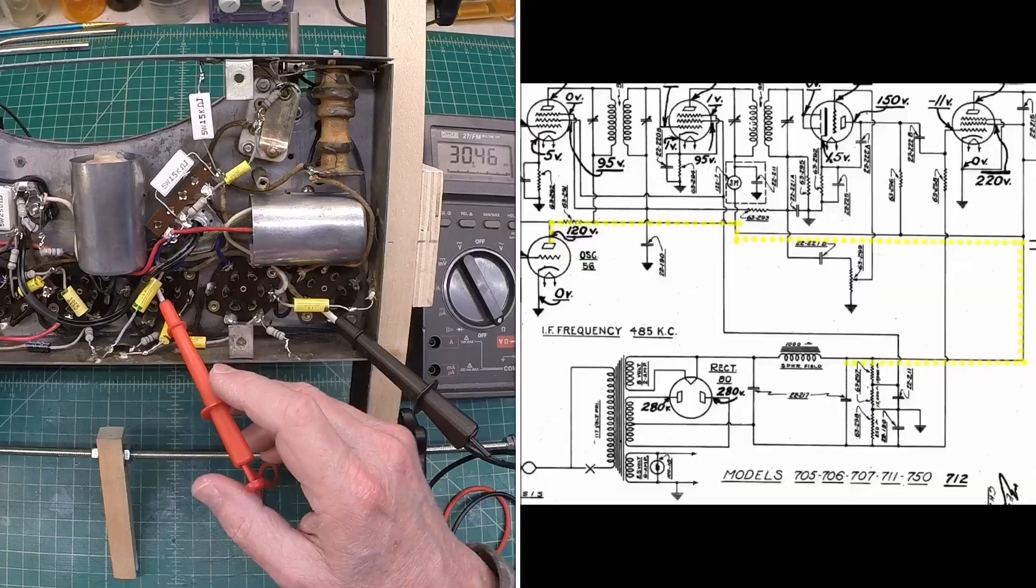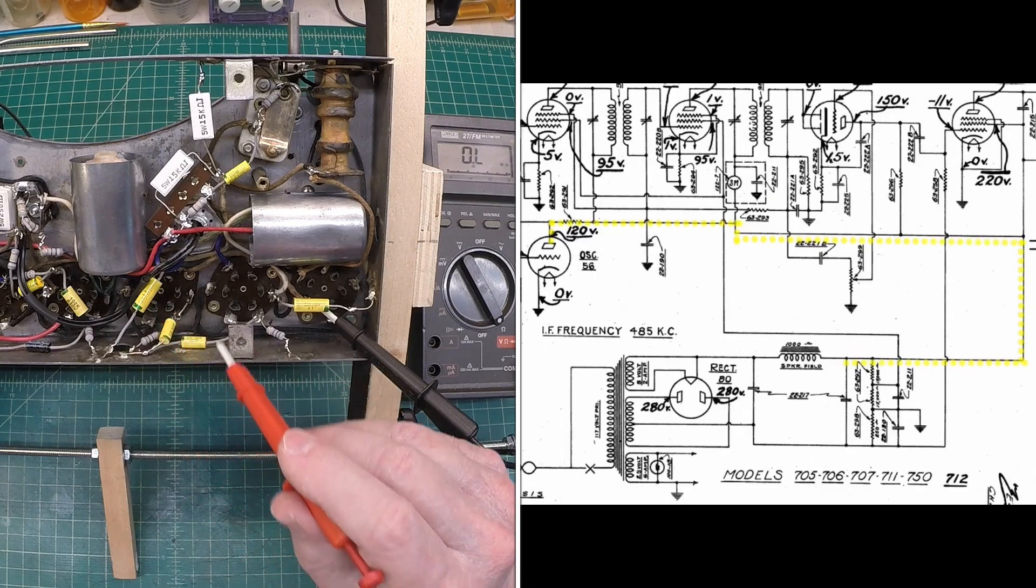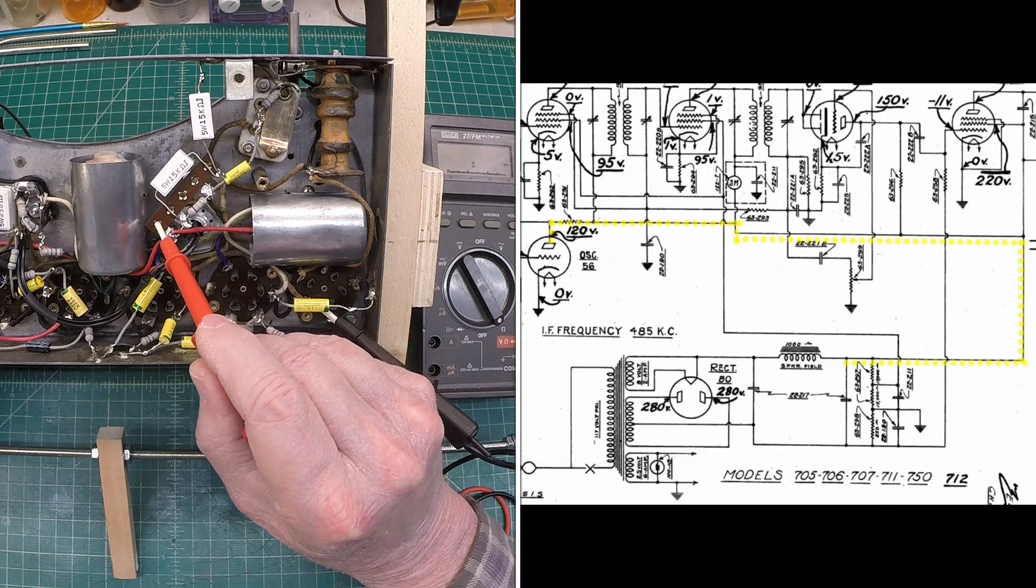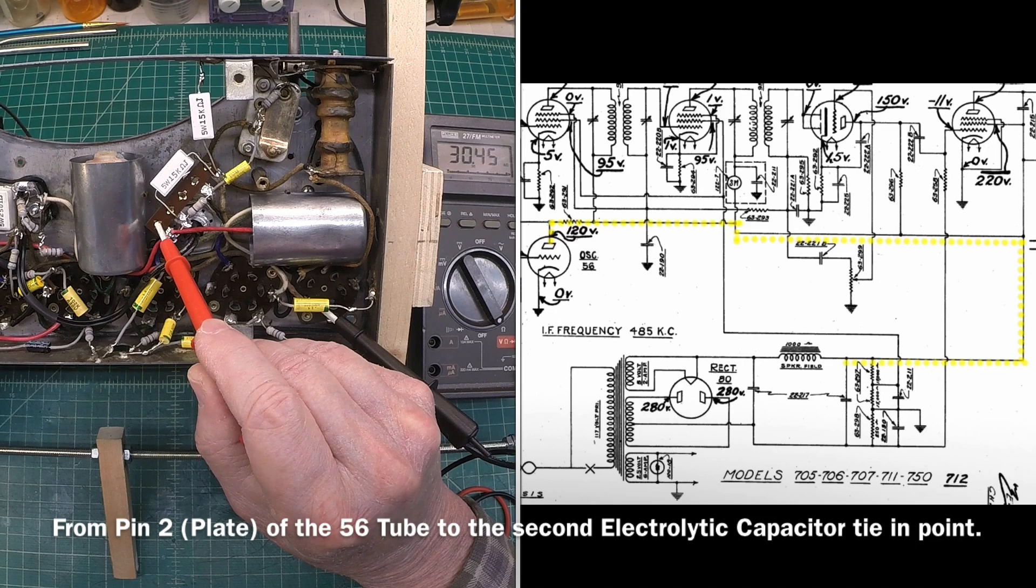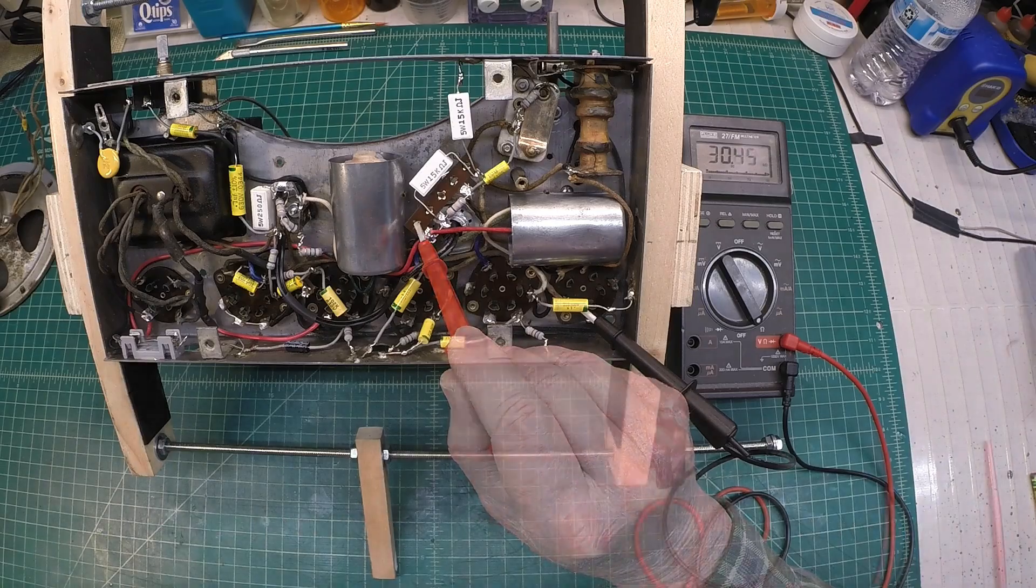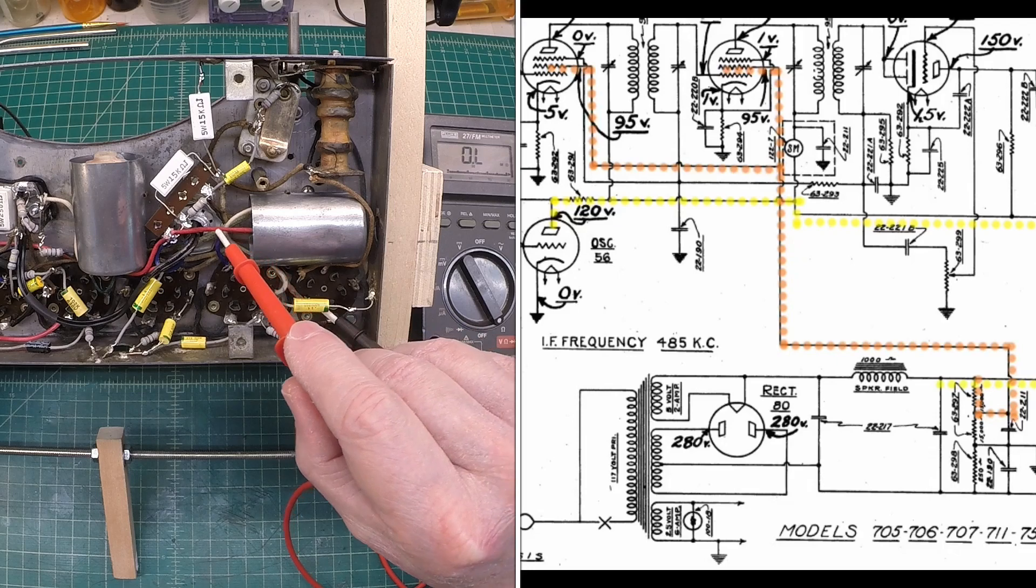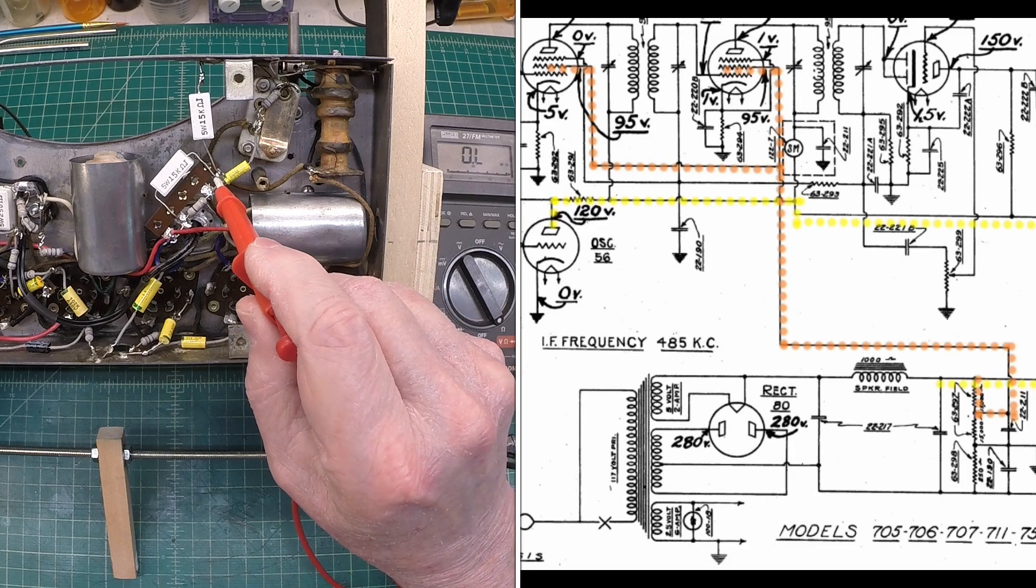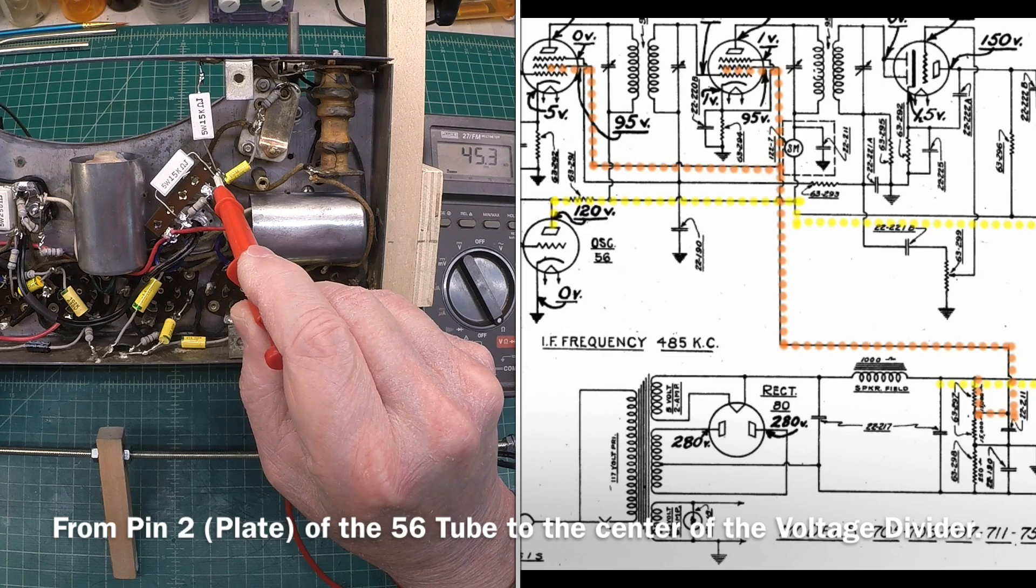So let's check the rest of the B plus rail. You'll see I've got it highlighted down to my electrolytic capacitors here. We should read the same DC resistance. And you can see that is the case. So we've got continuity between those points as we should. So while we're here, you'll notice I've got some things highlighted in orange. The voltage divider, the two 15k resistors. If we check at this junction point, we should read the same around 45k. And you can see that's the case.